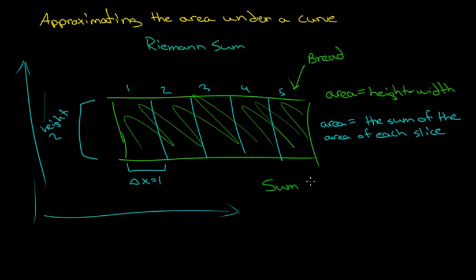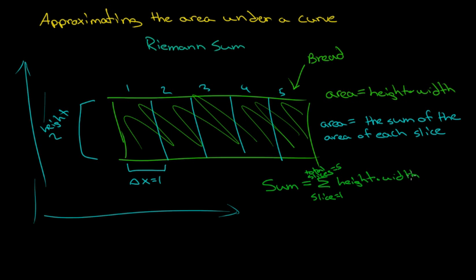Then we're taking two plus two plus two plus two plus two. We can notate this in Riemann notation: the sum equals the summation — capital sigma — starting at slice equals one, going to the total number of slices, which equals five. We're just taking the area of each one: height times the width. Each iteration we go up by one until we get to the total number of slices, and that gives us the area of the loaf of bread.